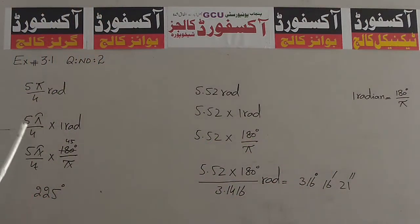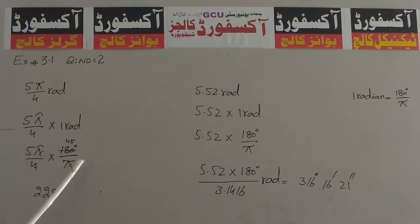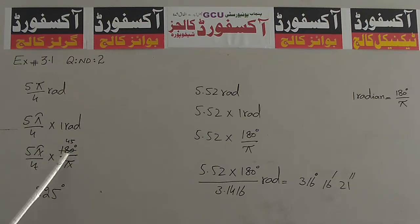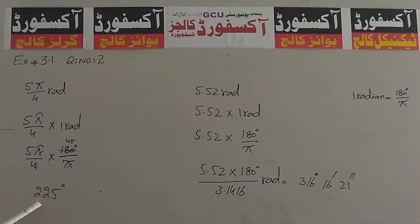5π/4 × 1 Radian = 5π/4 × 180 degree over Pi. Pi और Pi cancel, 4 और 180 cancel होकर 45 आएगا. 45 × 5 = 225 degree. यह हमने Radian को degree में तब्दील कर दिया है.